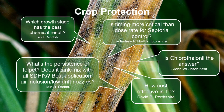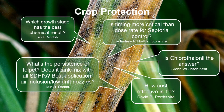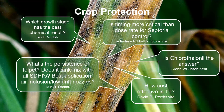From Andrew in Northamptonshire: is timing more critical than dose rate for septoria control? They're both critically important, but timing is paramount. We really need to get the timing right. If you let your T1 slip and latent infection gets into leaf three in conducive weather, you will be struggling to get that back. Dose rate is also important — you don't want to apply too much unnecessarily, but you need the right amount — but timing is the absolute priority.